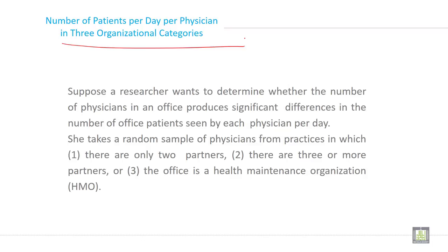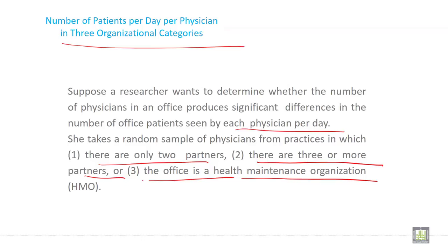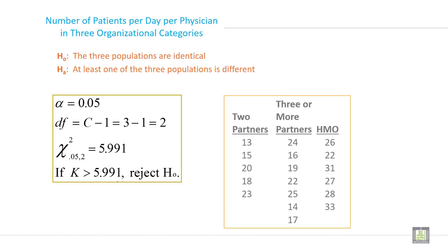Suppose a researcher wants to determine whether the number of physicians in an office produces a significant difference in the number of office patients seen by each physician per day. She takes a random sample of physicians from practices in which: one, there are only two partners; two, there are three or more partners; and three, the office is a health maintenance organization, or HMO. These are the three conditions. The null hypothesis is that the three populations are identical, and the alternate hypothesis is that at least one of the three populations is different.